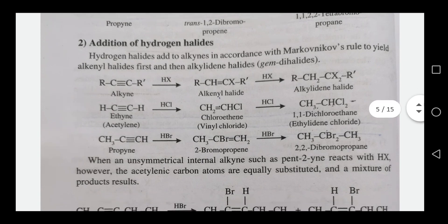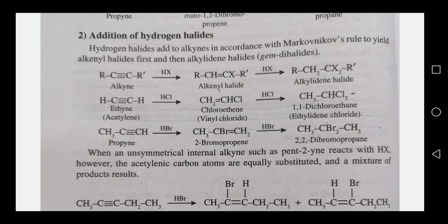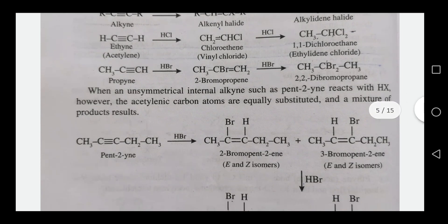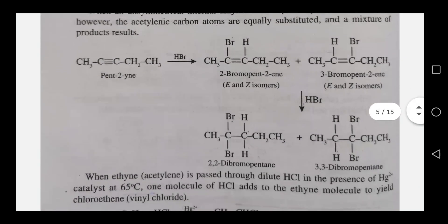For the addition of HBr to propyne, we get 2,2-dibromopropane and 2,3-dibromopropane as products. Using unsymmetrical internal alkynes, the reaction gives 2,2-dibromopropane as the Markovnikov product and 2,3-dibromopropane as the anti-Markovnikov product.